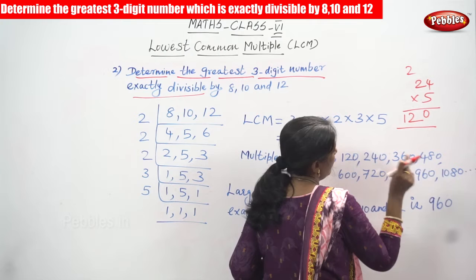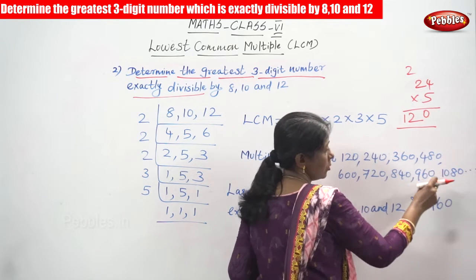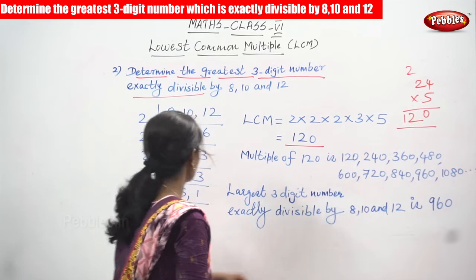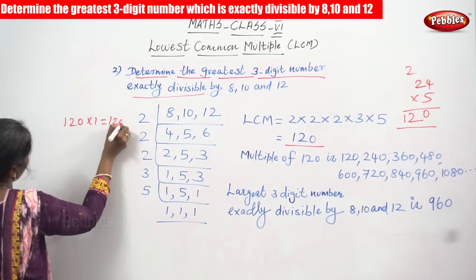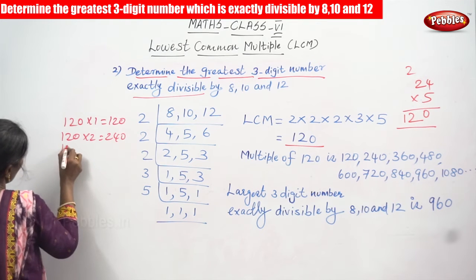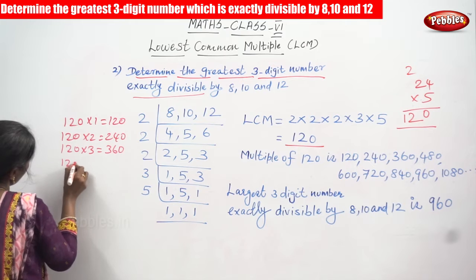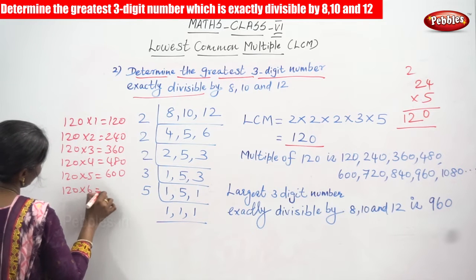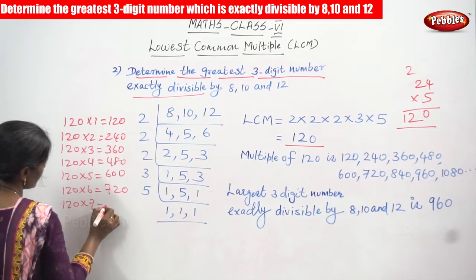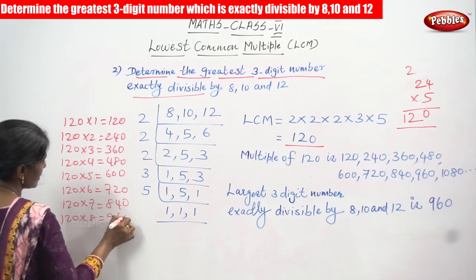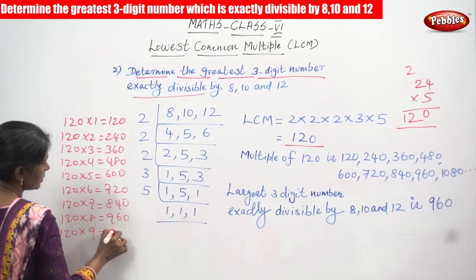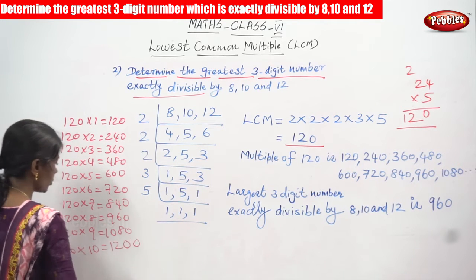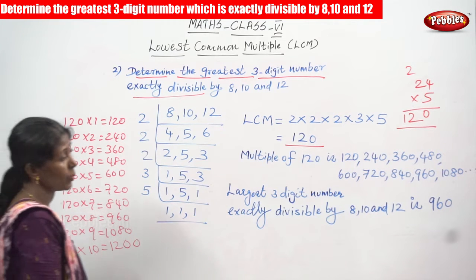Continuing: 120 × 7 = 840, 120 × 8 = 960, 120 × 9 = 1080, and 120 × 10 = 1200. You can also think of it as the 12-times table with a zero added: 12 × 8 = 96, so 120 × 8 = 960; 12 × 9 = 108, so 120 × 9 = 1080.